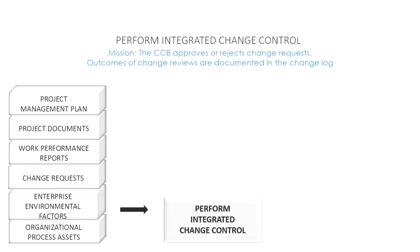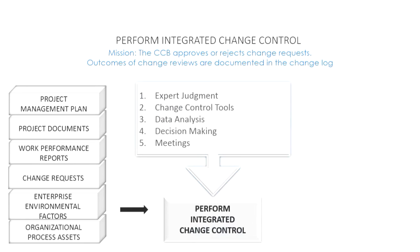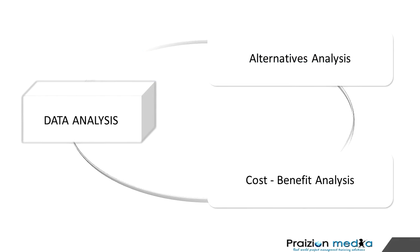Let's take a look at the tools and techniques. The first is the usual suspect — expert judgment. The next is change control tools, which refers to any tools used to capture, review, and disseminate change requests. A popular example is called Change Point — a virtual change control board where a change request comes in, one person approves it, and it moves to the next entity. Next is data analysis, which includes alternatives analysis — looking for alternatives — and cost-benefit analysis: what is the benefit of this change and what will it cost? At times you need to do an analysis to fully assess if a change request should be approved.